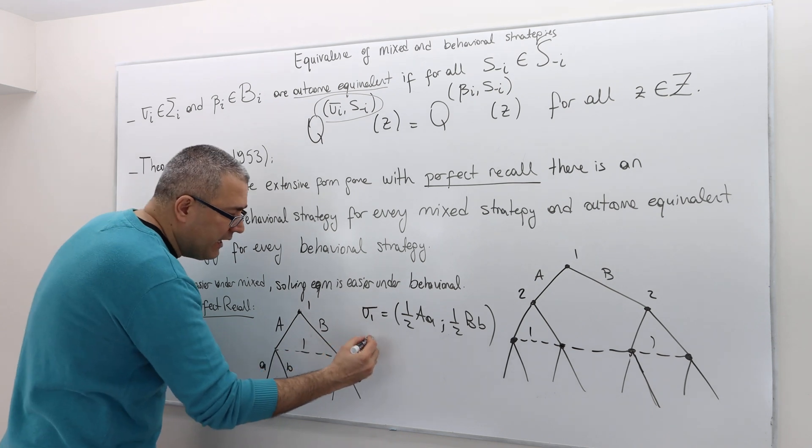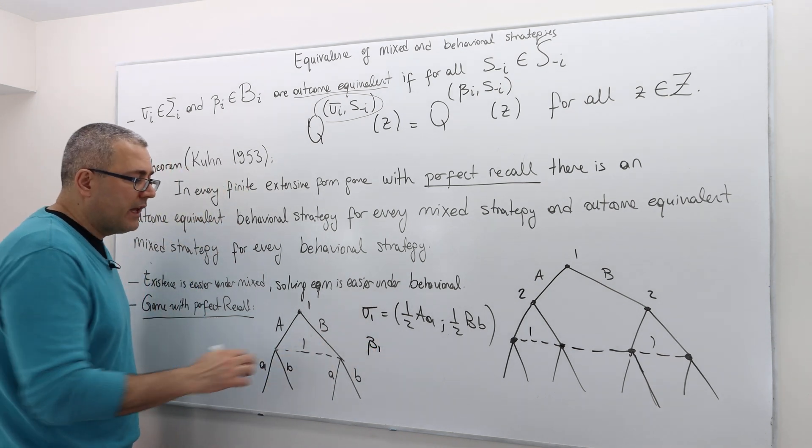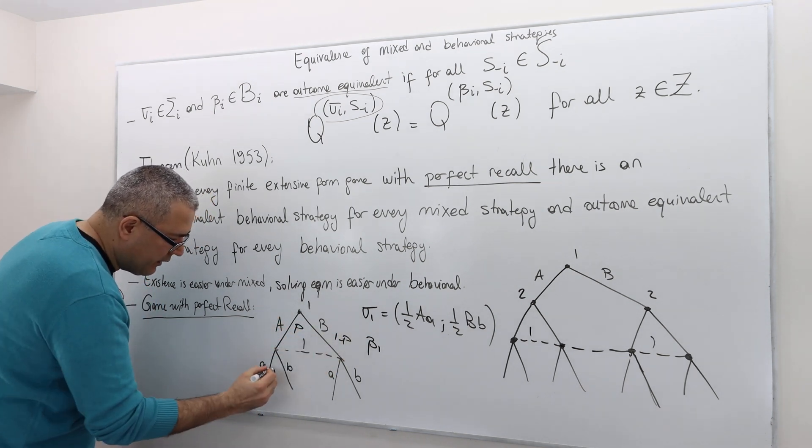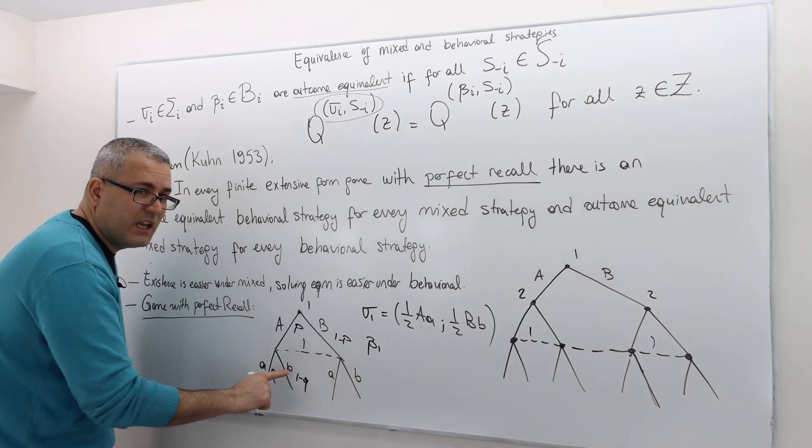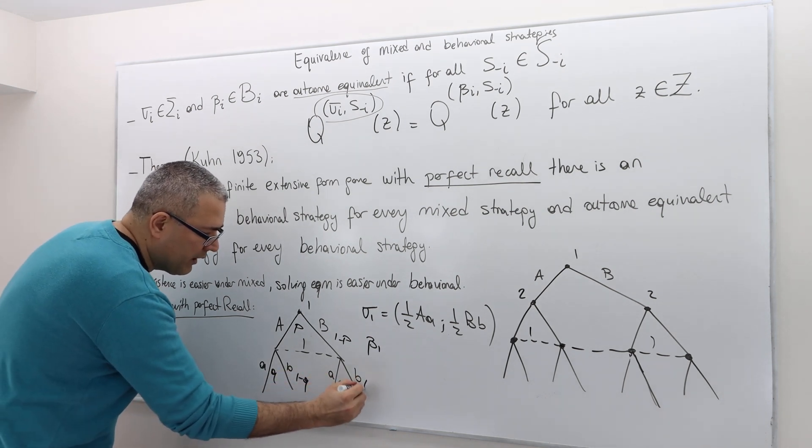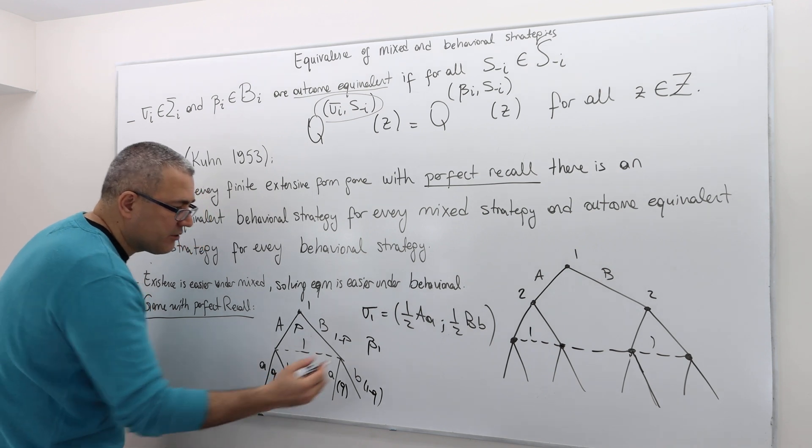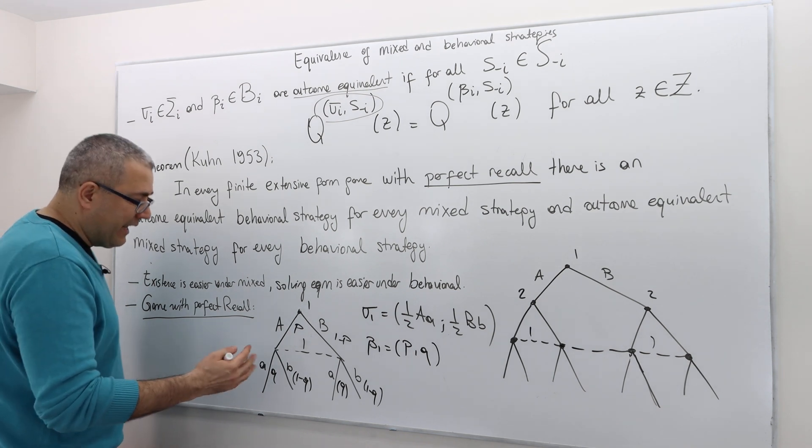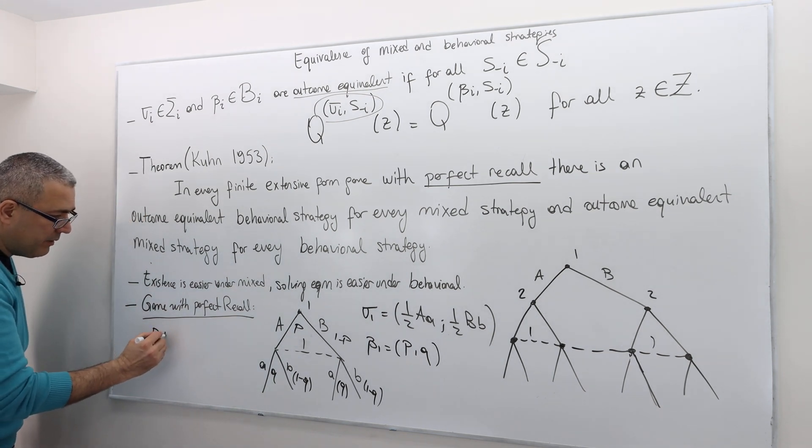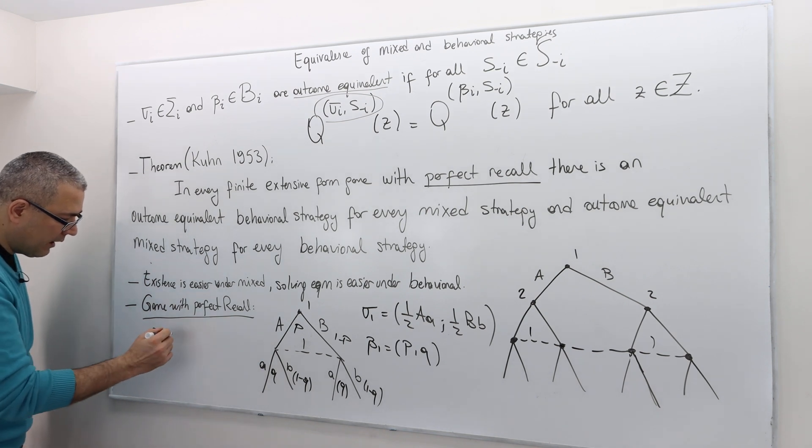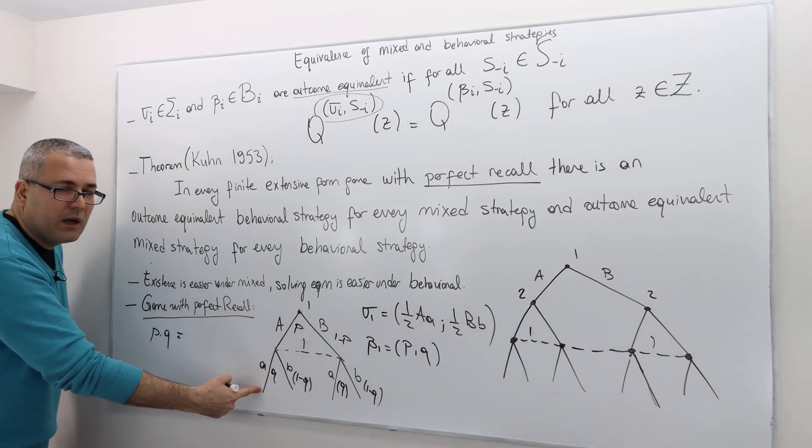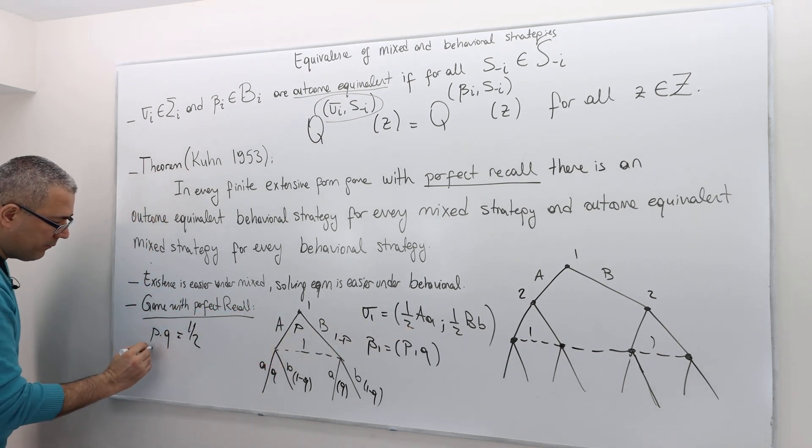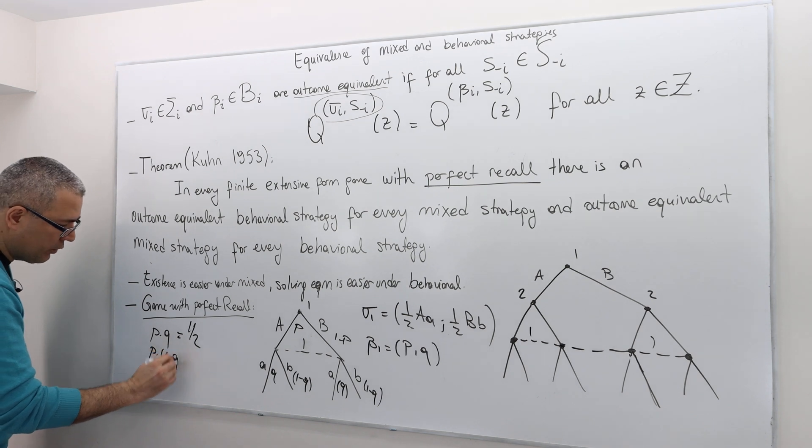The question is, do we have any mixed strategy that is outcome equivalent to this one? So let's call this P, 1 minus P, and then Q, 1 minus Q. Because these are in the same info set, this should also be played by Q, 1 minus Q, right? The behavioral strategy is going to look something like the P and the Q value. The question is, can I find, for example, P and Q values such that P times Q, the likelihood of this terminal history is, remember, one half. But also, P times 1 minus Q is zero, right? Because according to this strategy, AB will never occur.